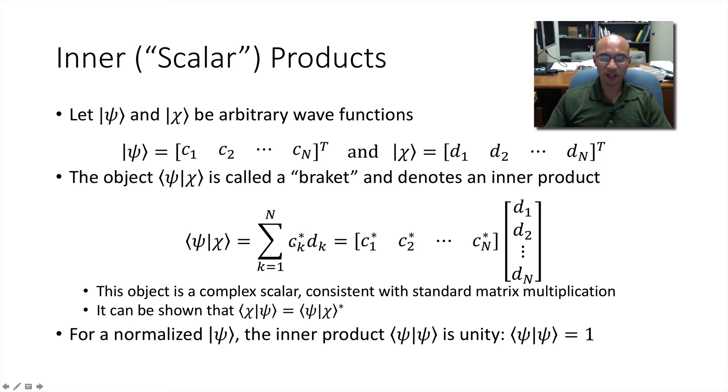So the kth element of psi is c sub k, you complex conjugate it. And then you take the corresponding element of chi. And you take the product. And then all those products sum together. This is just like the scalar product using vectors. You can write that in matrix form like this. We can show that bracket chi psi is the complex conjugate of psi chi. For a normalized psi, the inner product psi psi bracket has to be unity.